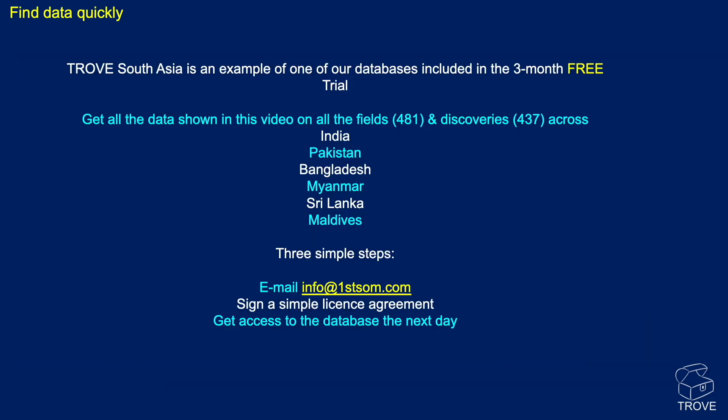Trove South Asia is an example of one of our databases included in the three-month free trial. You get all the data shown in this video on all the fields — 481 of them — and some 437 discoveries across India, Pakistan, Bangladesh, Myanmar, Sri Lanka, and Maldives. Three simple steps: send us an email to let us know you're interested, we'll send you a copy of our license agreement, and once it's signed we'll try to get the database to you the very next day — a very fast turnaround.